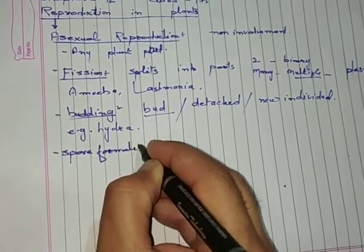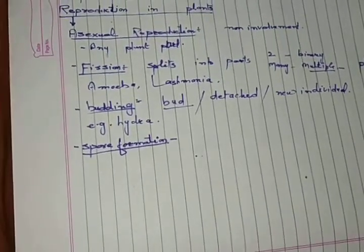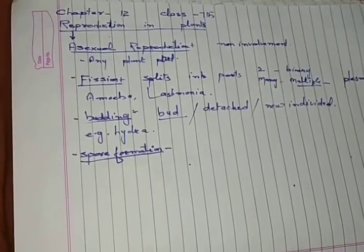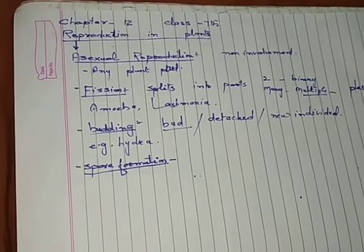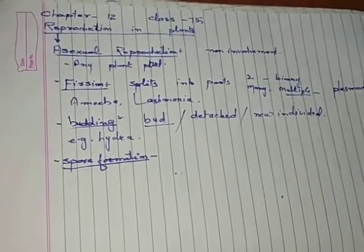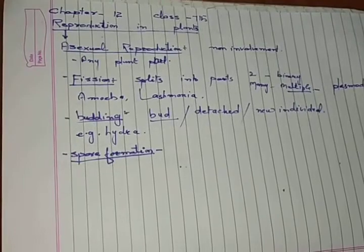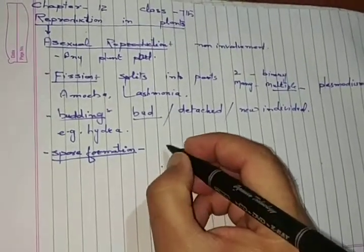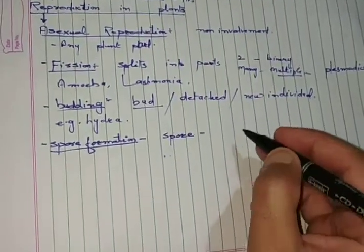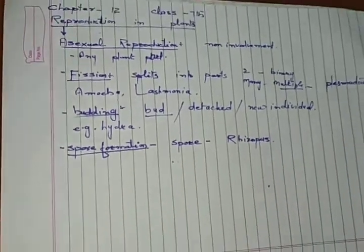This is spore formation. What happens in spore formation? The parent plant produces very many reproductive units which we call spores. The spores are dispersed with the help of wind, water, or animals. On getting favorable conditions, it can develop into a new individual. We will see it in a plant which we call Rhizopus. Rhizopus shows spore formation.